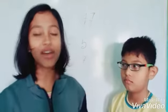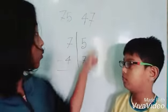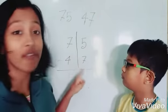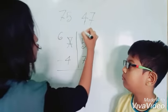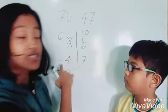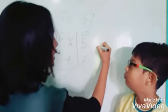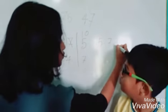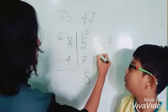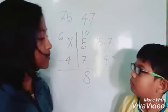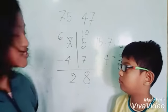Now, line up the numbers vertically in each place. Calculate the ones place. As we cannot remove 7 from 5, move 1 ten from the tens place to the ones place. Now calculate the ones place: 15 minus 7 equals 8. Now, calculate the tens place: 6 minus 4. What's the answer? 2. Great. So, the answer is 28.